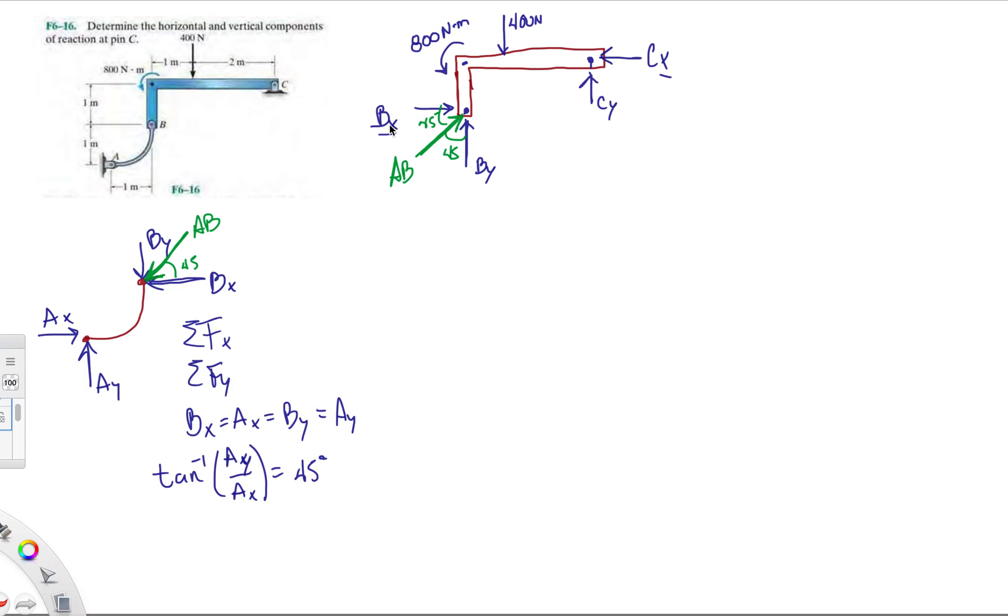Which is going to make it easier because then I don't have two unknowns here, I just have AB. So I know that BY is going to be AB cosine 45, and then AB sine 45.